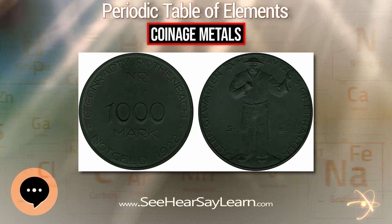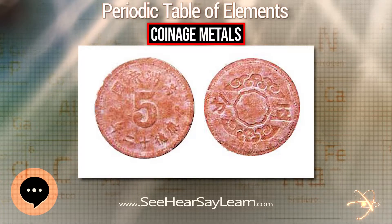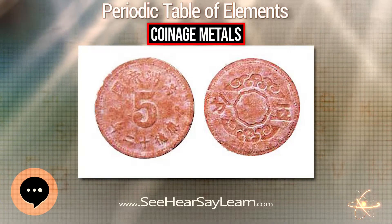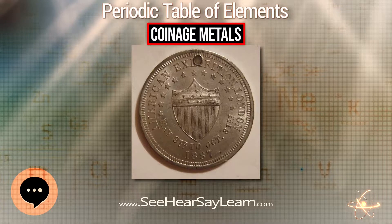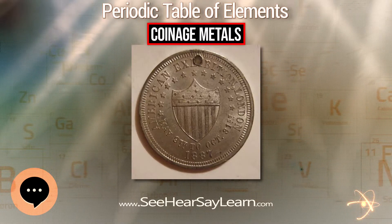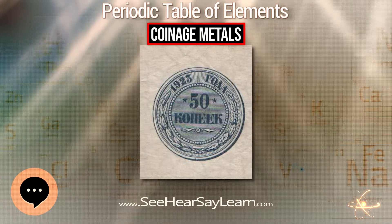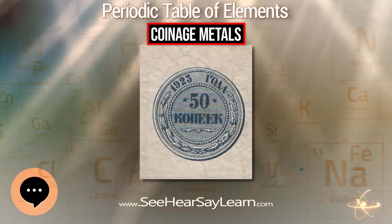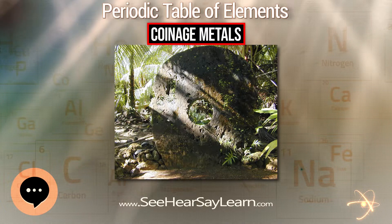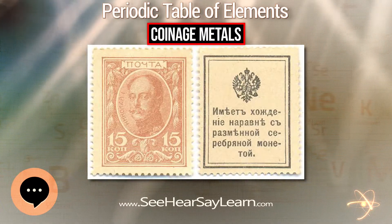Coins not intended for circulation or for intrinsic value have also been made experimentally using an even larger variety of metals, since they function as fiat money. In general, coins intended for circulation must have metal values considerably less than their face values.